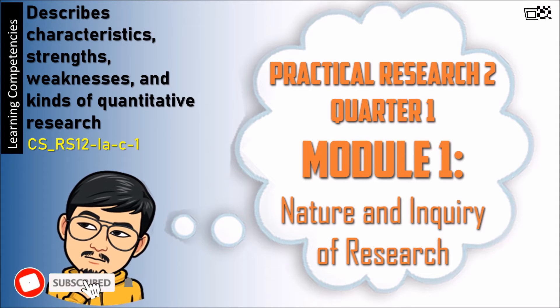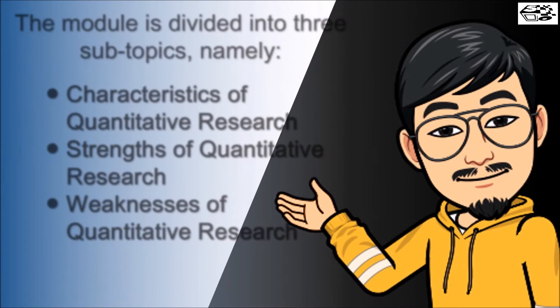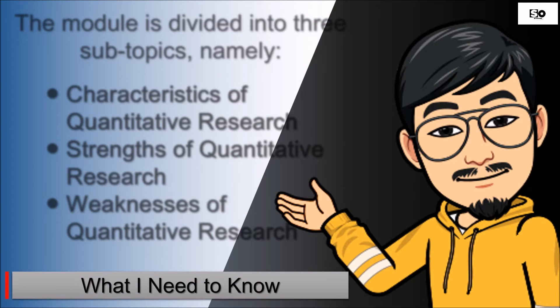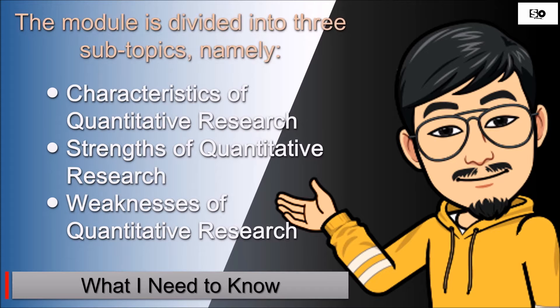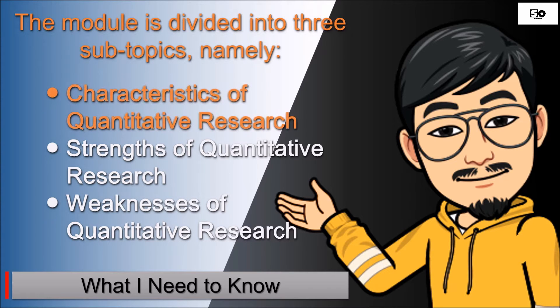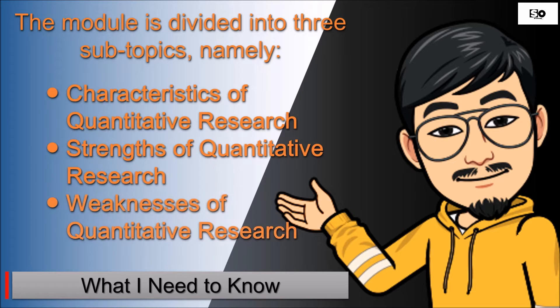Practical Research 2, Quarter 1, Module 1: Nature and Empowering of Research. What I need to know - the module is divided into three subtopics, namely: characteristics of quantitative research, strengths of quantitative research, and weaknesses of quantitative research.